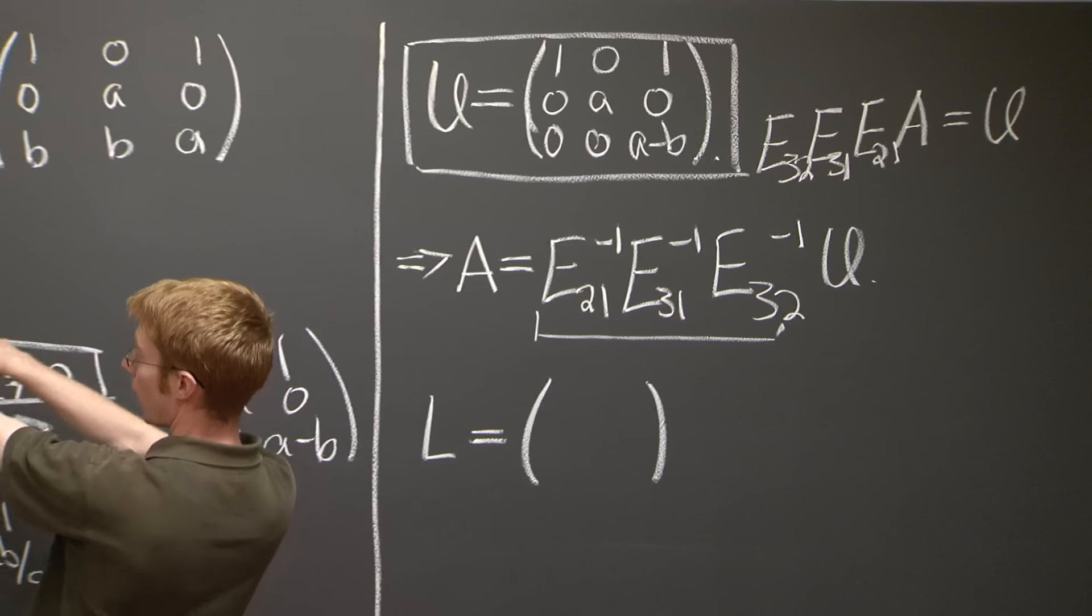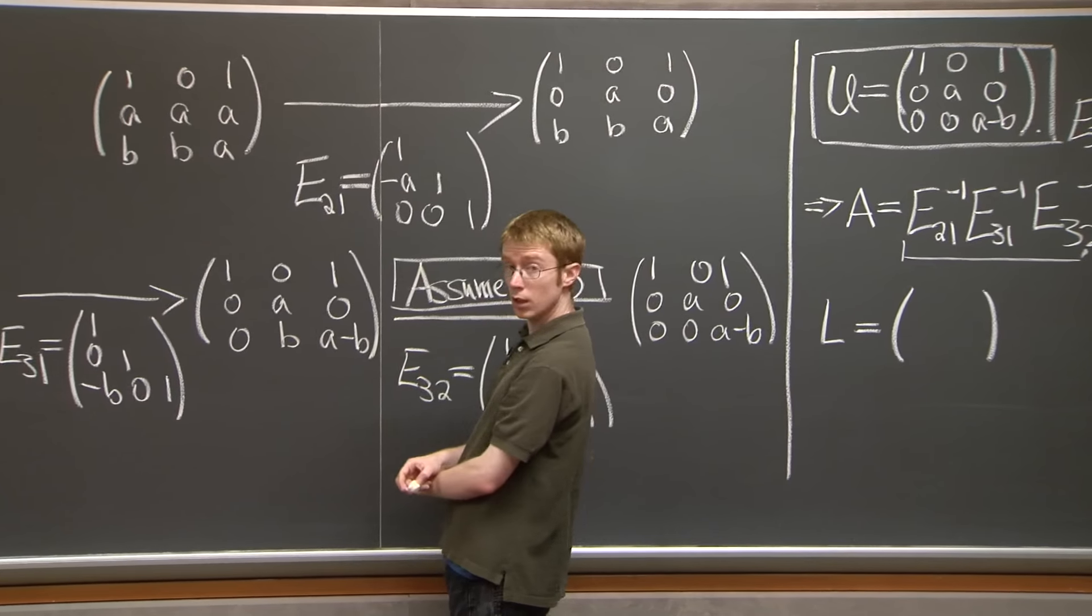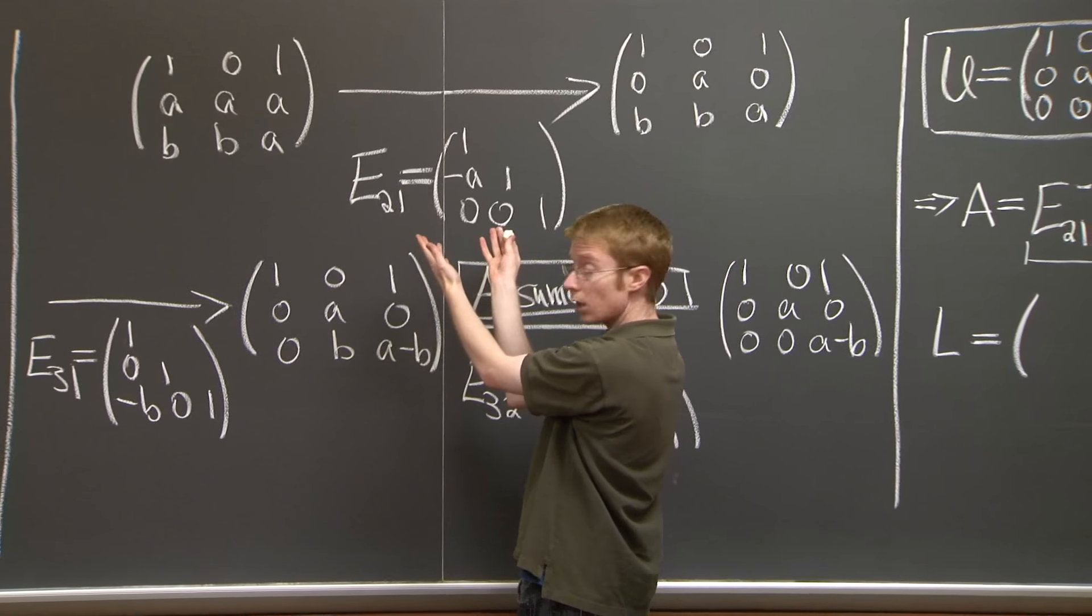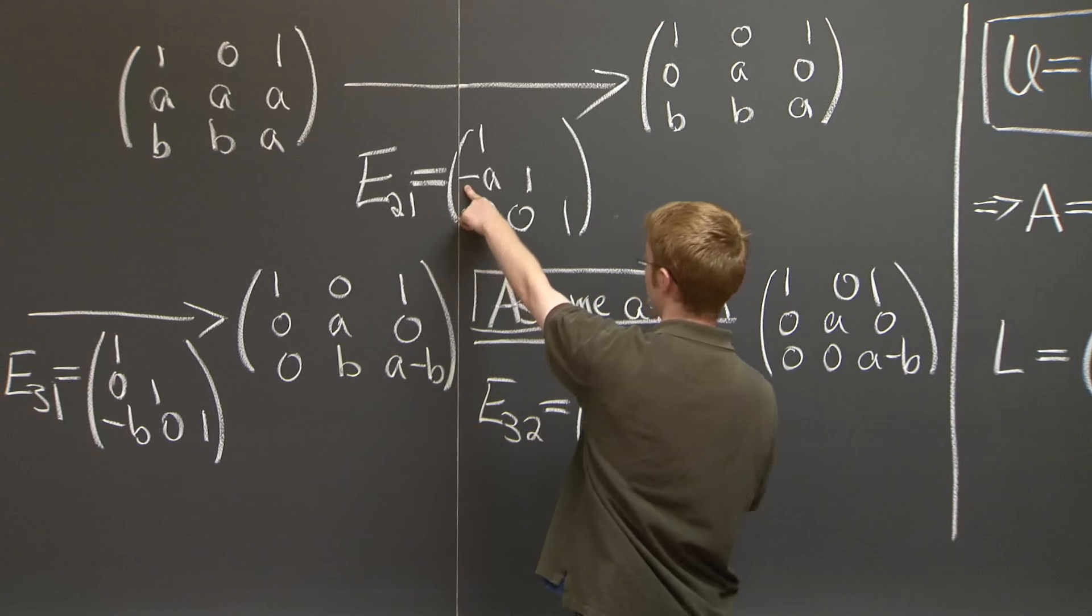So L is the product of three matrices. I need to get them by going back and looking at these three elimination matrices and taking their inverses. Well, the nice thing about taking an inverse of an elementary matrix like this is we just make a minus a plus, or a plus a minus.